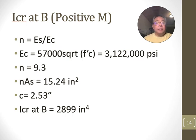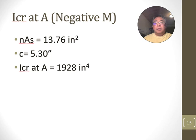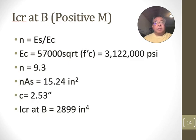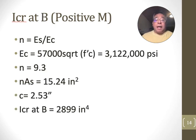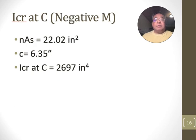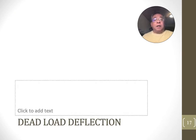You do this at all three. There's B, positive, A, negative, and C, negative. And so, from left to right, 1928 inches to the fourth when it's cracked, 2899 and 2697. So in the next video, we'll use all these numbers and we'll calculate the dead load deflection. Thank you.